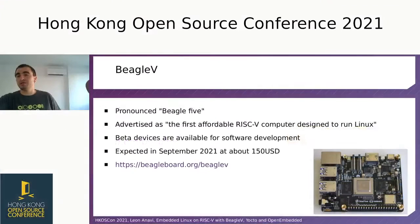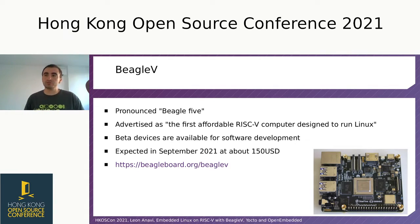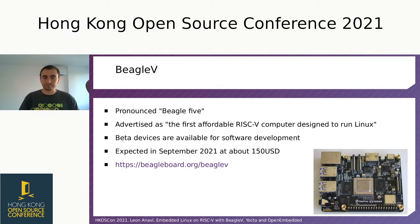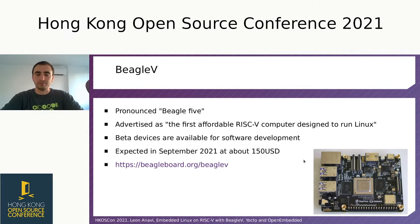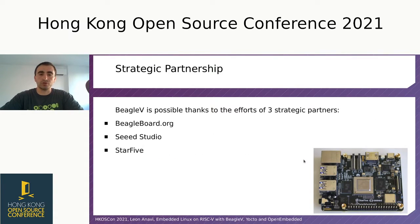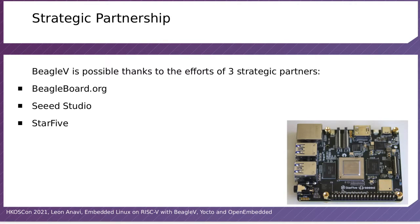Keep in mind that at the moment there is a global chip shortage and hardware manufacturing is going a little slower than expected, so just be aware the whole industry is experiencing some difficulties. BeagleV-5 is available thanks to the efforts of three strategic partners: BeagleBoard Foundation, famous for their BeagleBone Black development boards with Texas Instruments systems-on-chip.